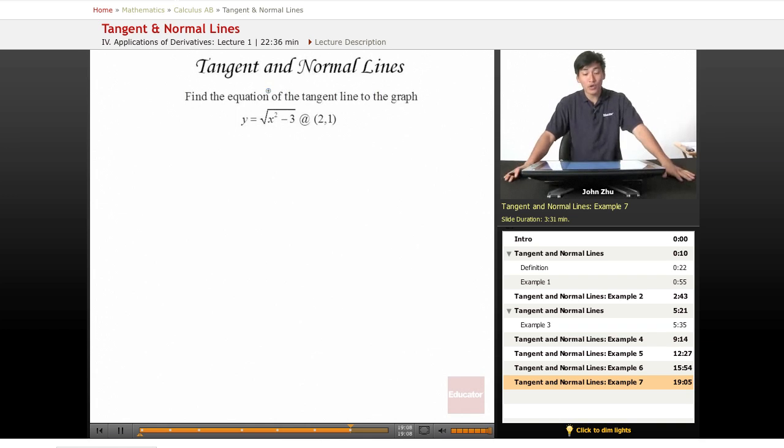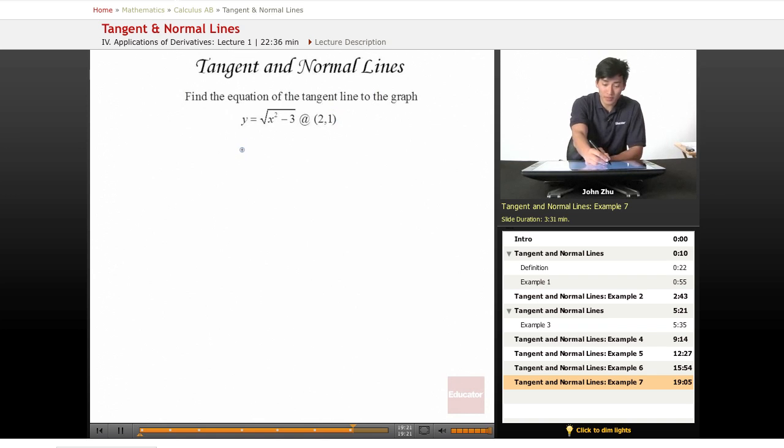In this example, we're finding the equation of a tangent line once again, just a different expression. Right now, we don't have to solve for a y-coordinate because we're given one. So at (2,1), all we have to do is find the derivative of y.